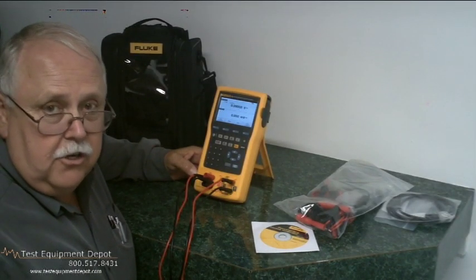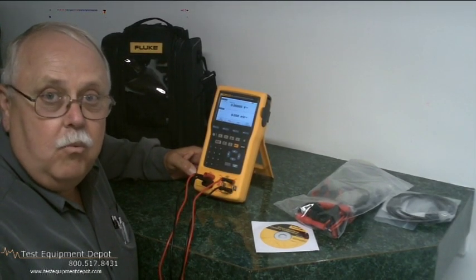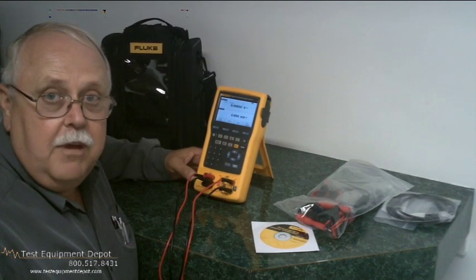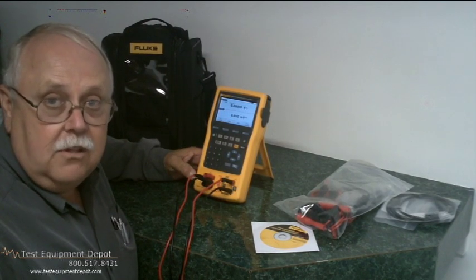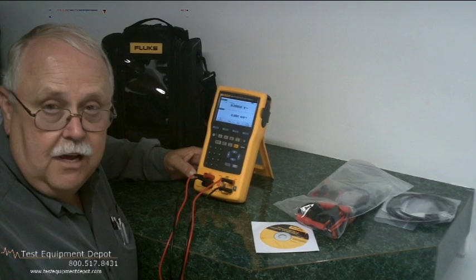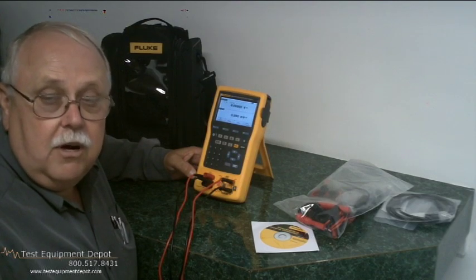For a simple demonstration, what I want to do is output one volt DC, and I'm going to measure that one volt back into the calibrator to show you how the as found and as left calibration process would work.